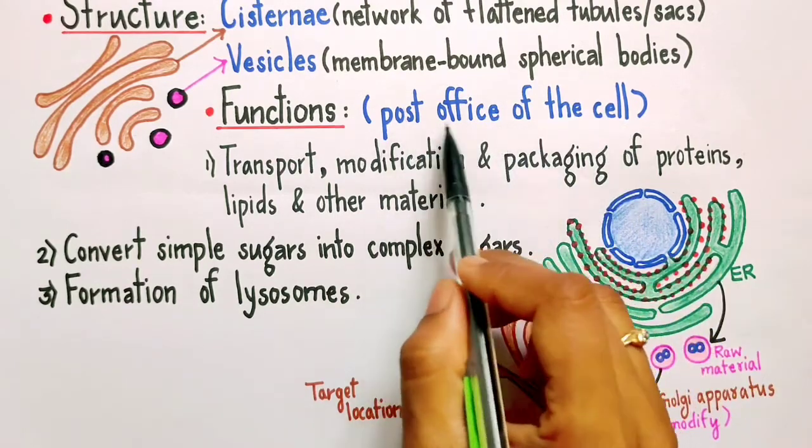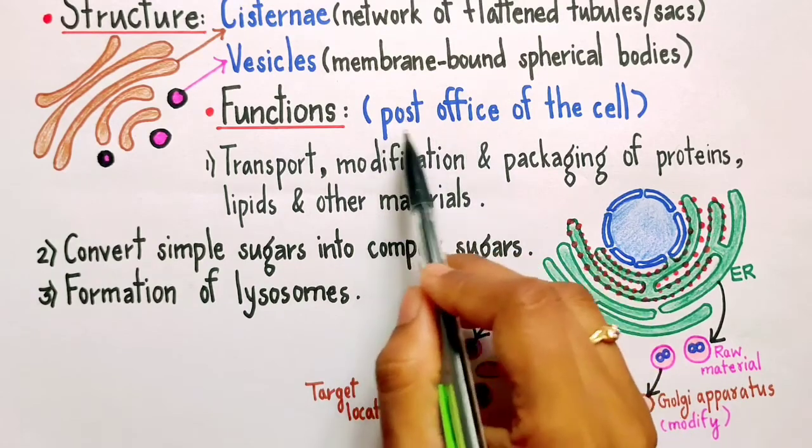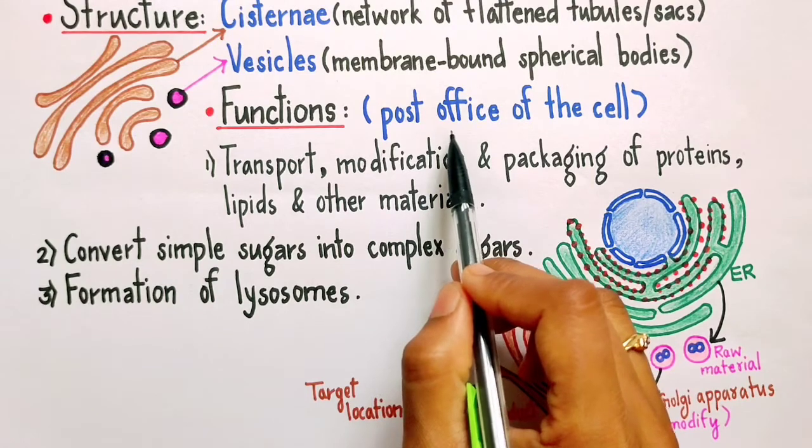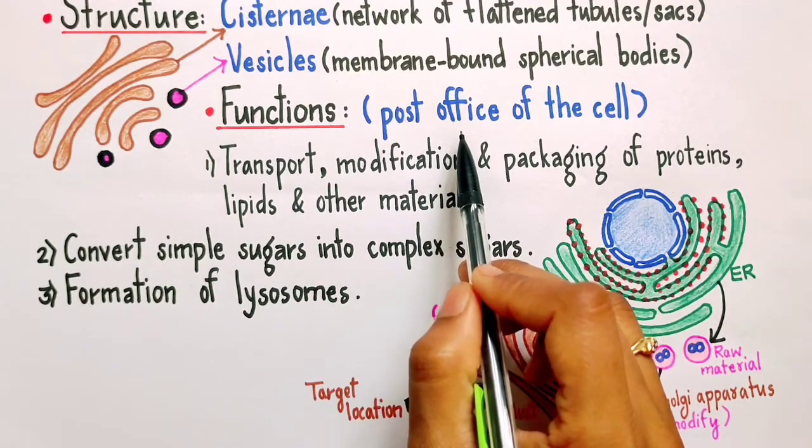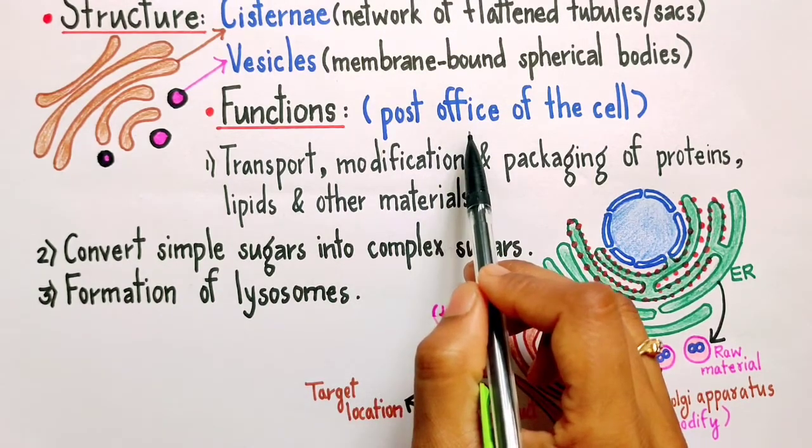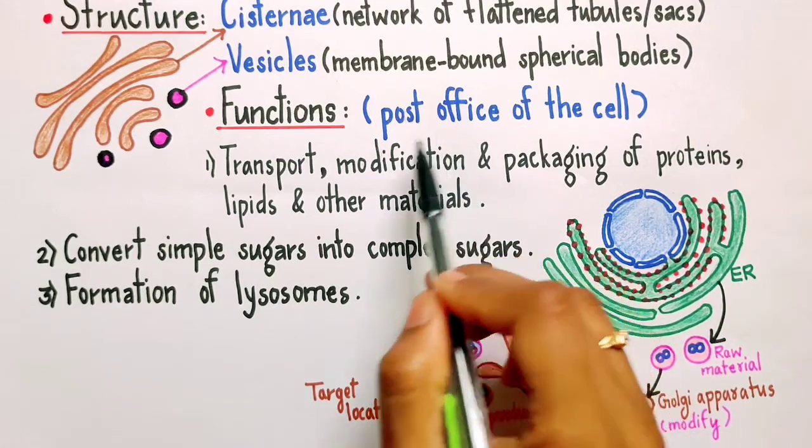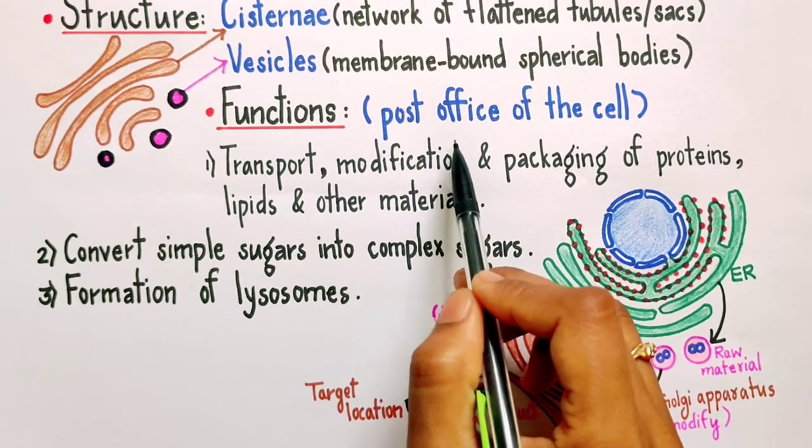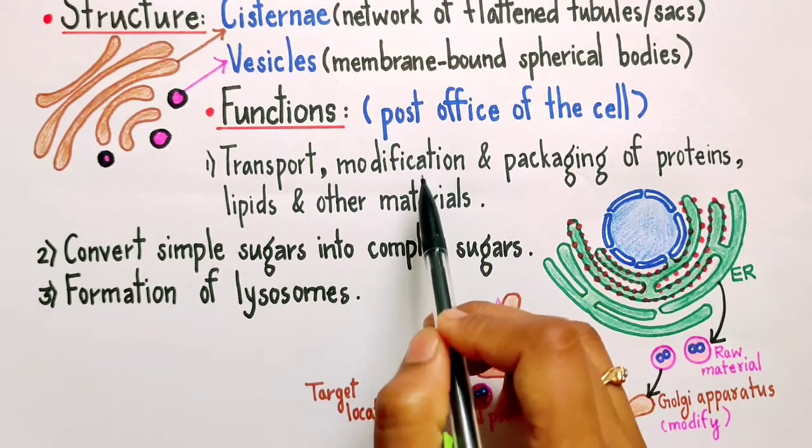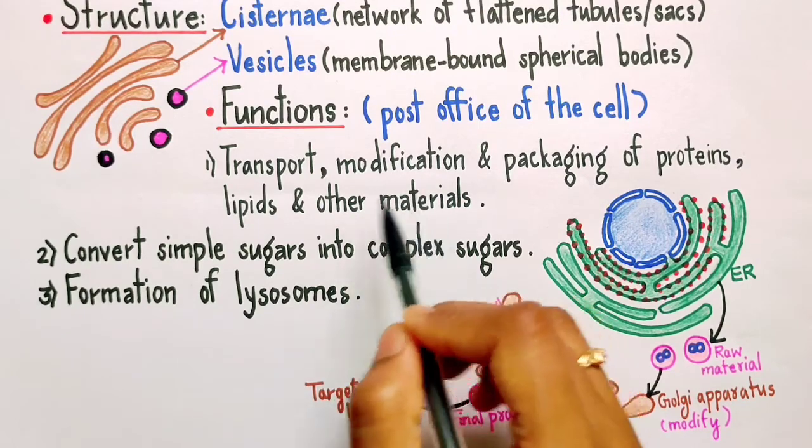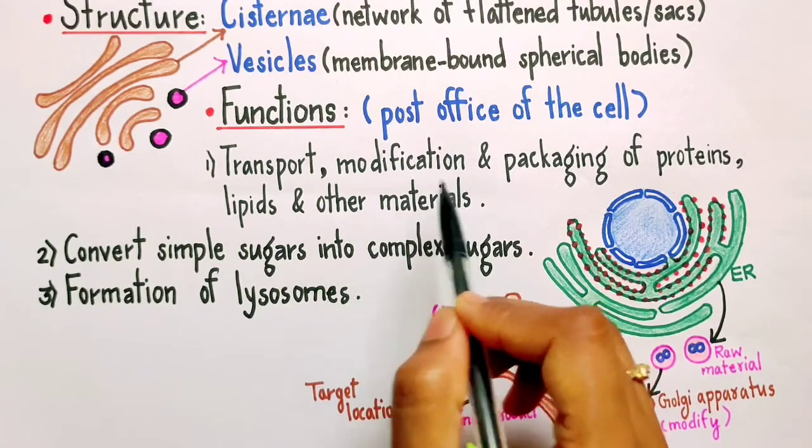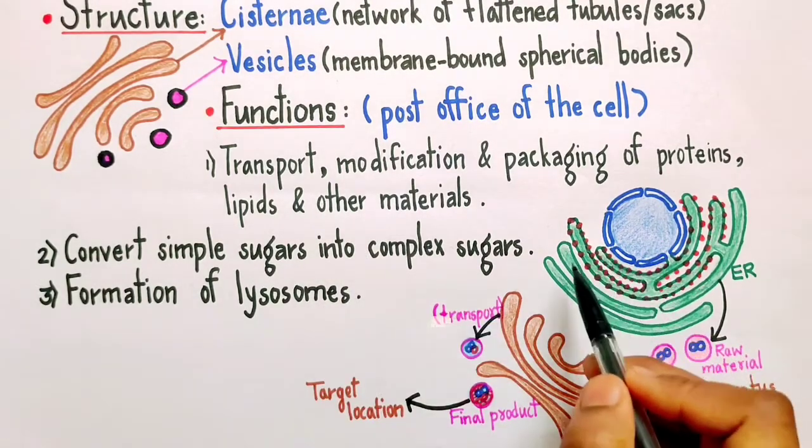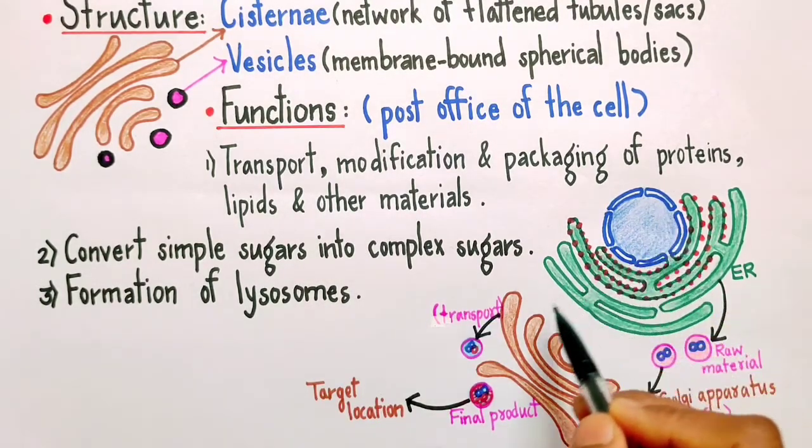Basically, post office is a place which receives envelopes from different places and all those envelopes are carefully evaluated for their addresses and then they are segregated into groups, they are stamped and finally they are dispatched or sent to their final location. Likewise, even Golgi apparatus receives certain raw materials, it modifies them and then it dispatches or sends them to their final location. Now let us try to understand this point with the help of this diagram.